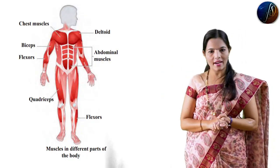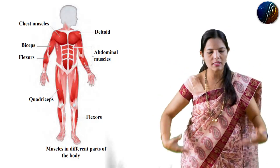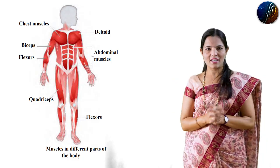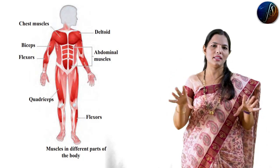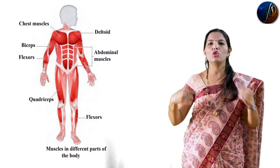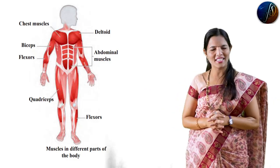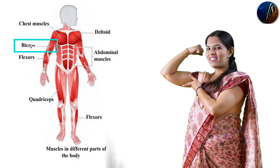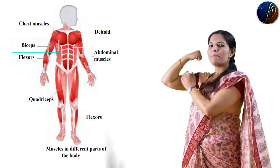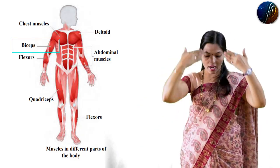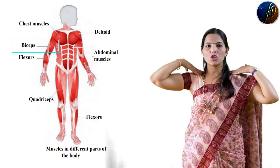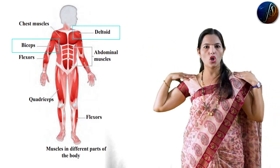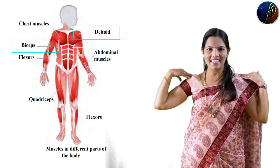Students, in your book there is a diagram. When we look at the muscles, there are different types of muscles in the body. The first muscle to know from the diagram is called a deltoid - the shoulder muscle is called deltoid.